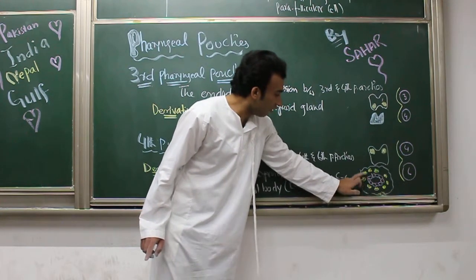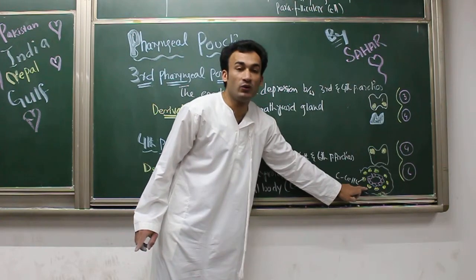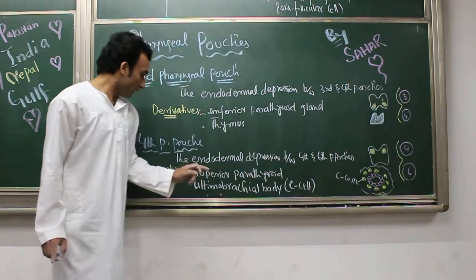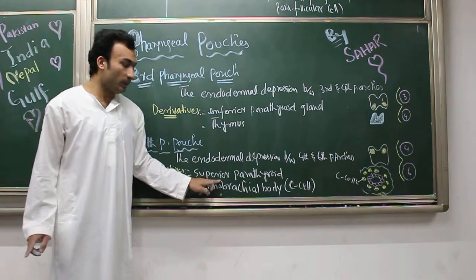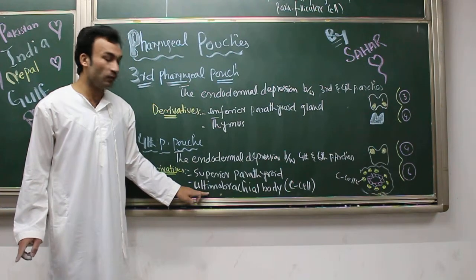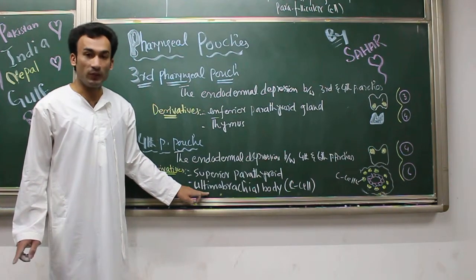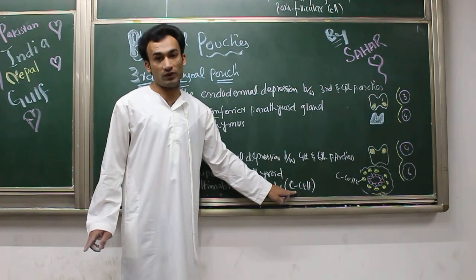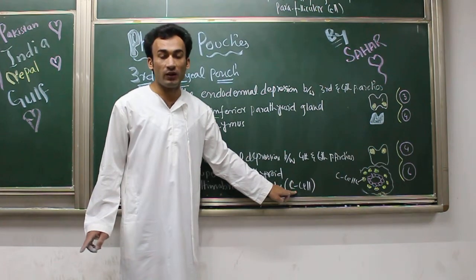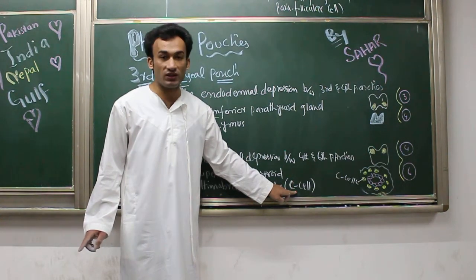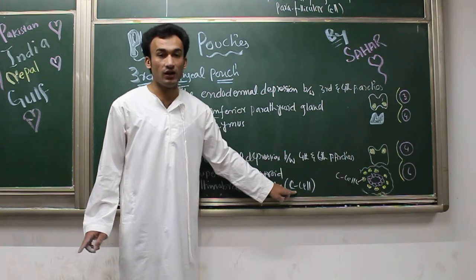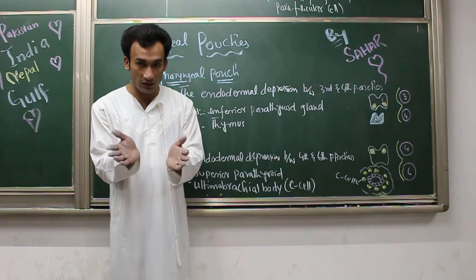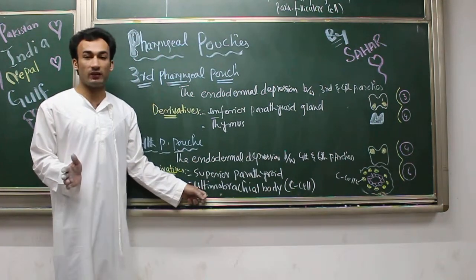You can also see the thyroid gland with follicular cells, and around these cells are parafollicular cells, also called C-cells of the thyroid gland. So the derivatives of the fourth pharyngeal pouch are the superior parathyroid gland and the ultimobranchial body, which can also be called C-cells or parafollicular cells. For MCQs, they may give you C-cells, parafollicular cells, or ultimobranchial body.